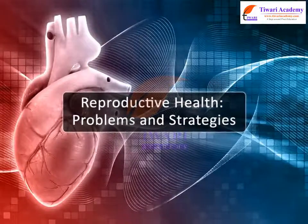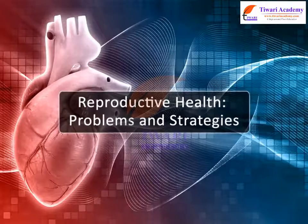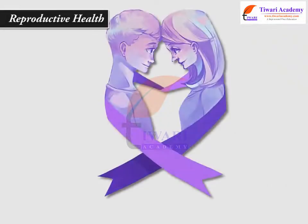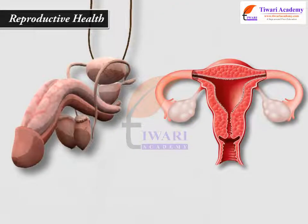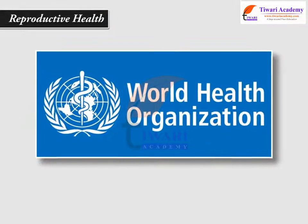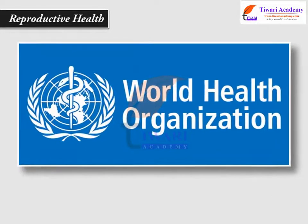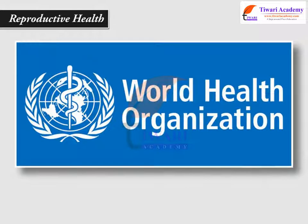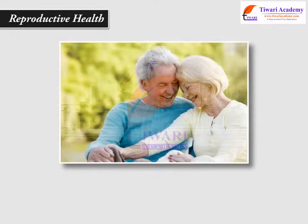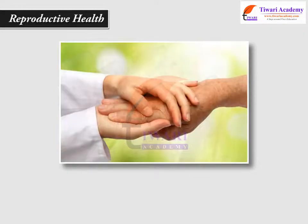Reproductive Health: Problems and Strategies. The term reproductive health simply refers to healthy reproductive organs with normal functions. But according to the World Health Organization (WHO), reproductive health means a total well-being in physical, emotional, social and behavioral aspects in reproduction.